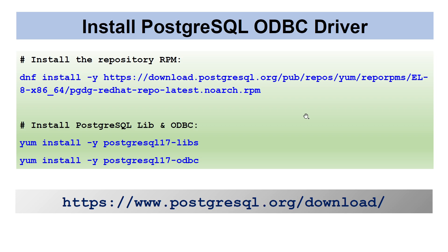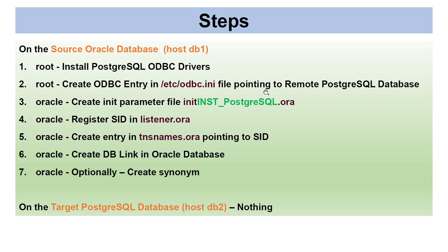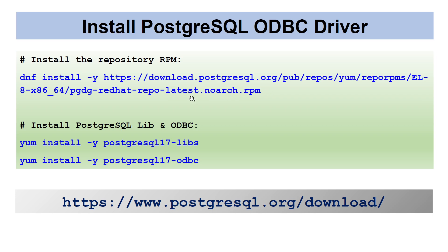Now that we have seen the steps, let's look at them in detail. To install the PostgreSQL ODBC driver, we will set up the repo. These are the two packages we will be installing: postgresql17-libs and postgresql17-odbc. You can manually download these files from the web, or set up the repo as I have done. I'm setting the EL8 repo because we are doing this on Linux 8. Based on your PostgreSQL version, you might want to change the driver version. This is the website from where you can get the repo information and these packages.